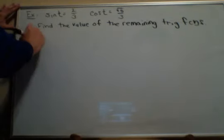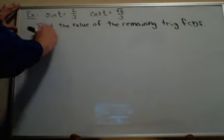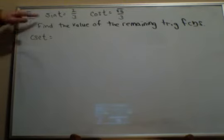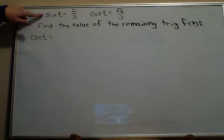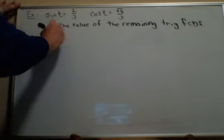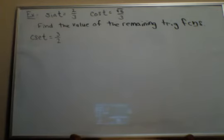Well, it doesn't really matter where you start. So I'm going to start with cosecant. I'm starting with cosecant because it seems to be the easiest one to deal with at the time. Because I know that cosecant is the reciprocal of sine. If sine is two thirds, the cosecant is the reciprocal of that or three halves. So that one's done.